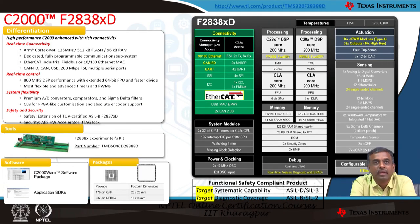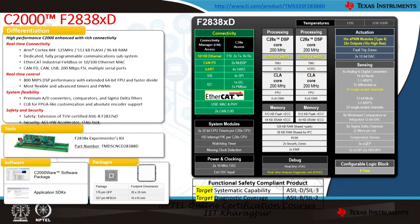The F2838XD is a very high-performance device with rich connectivity. It features a communications manager supporting EtherCAT, Ethernet, CAN-FD, CAN, USB and more. Two C28X cores running at 200 MHz and two CLA cores at 200 MHz, plus the 125 MHz communications manager, give a total of 925 MIPS. This device is also functionally safety compliant, meeting ASIL-D and SIL3 capability, and is one of the most leading high-performance devices that can scale into many end applications.